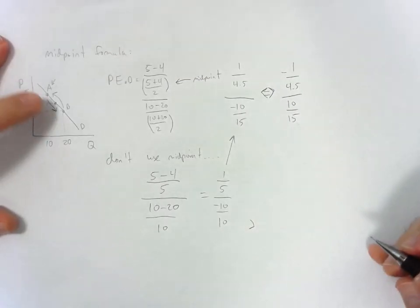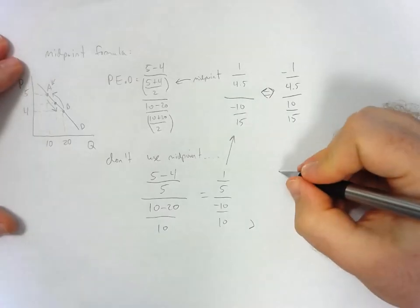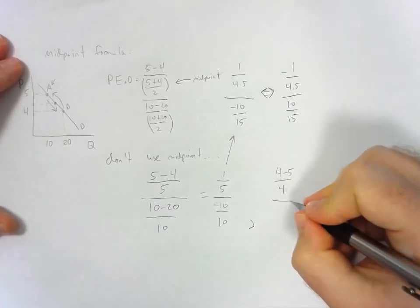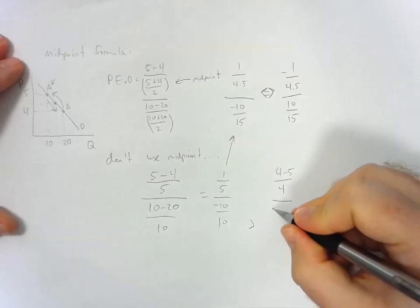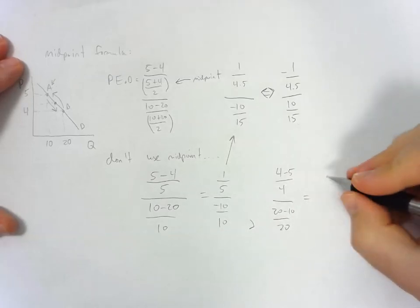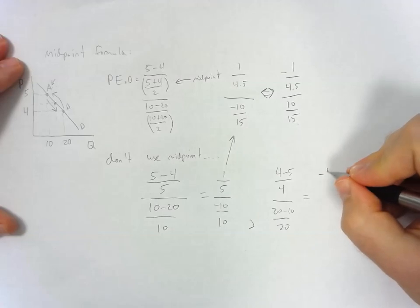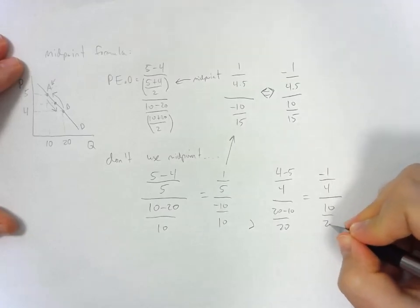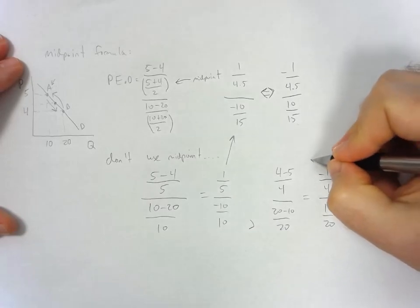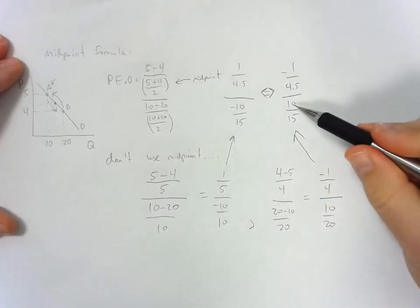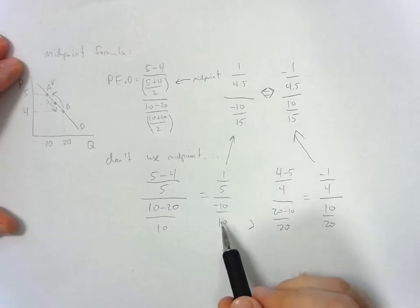If we move from B to A without the midpoint formula, we get (4 − 5) / 4 divided by (20 − 10) / 20, which simplifies to −1/4 divided by 10/20. This is also very different from the midpoint formula result and from the A-to-B calculation.